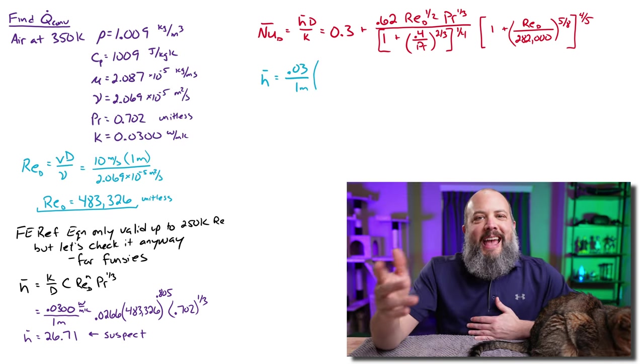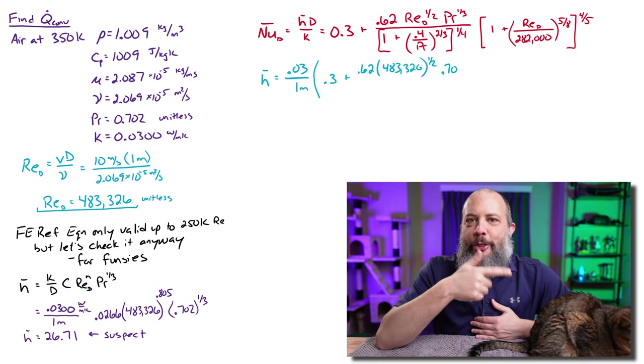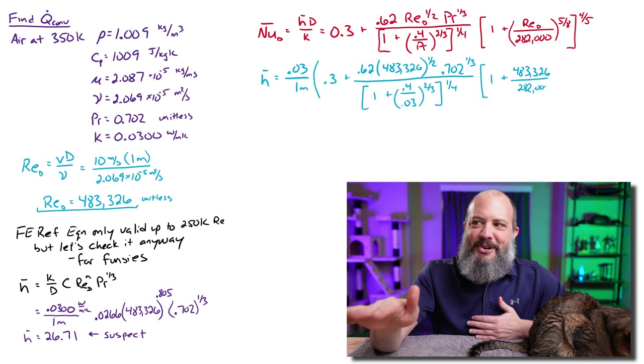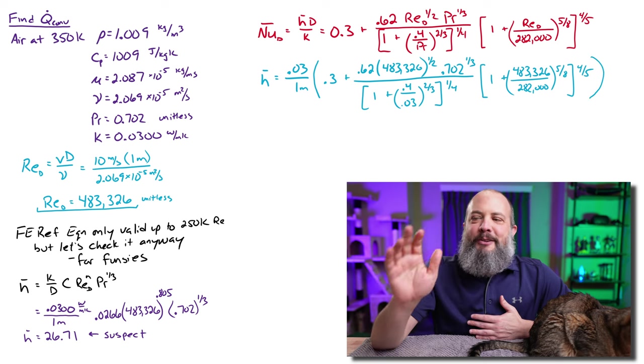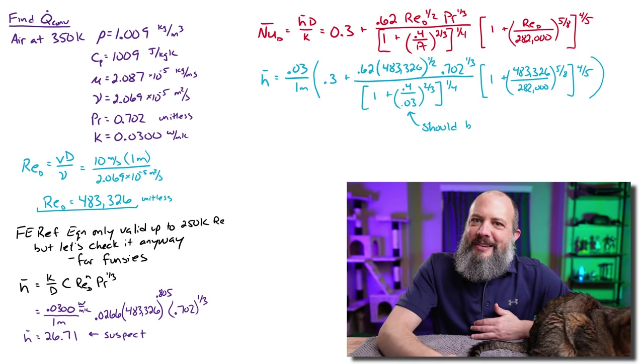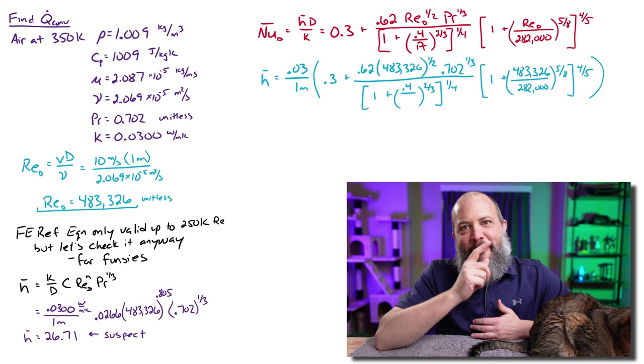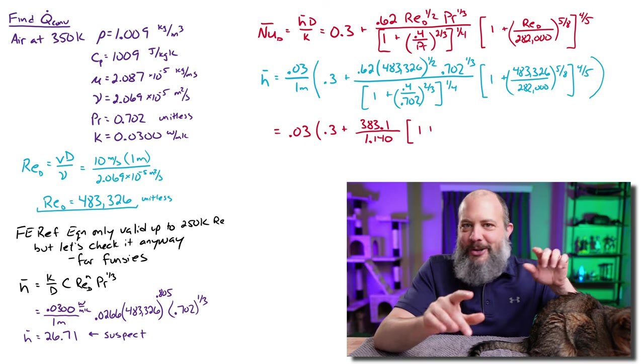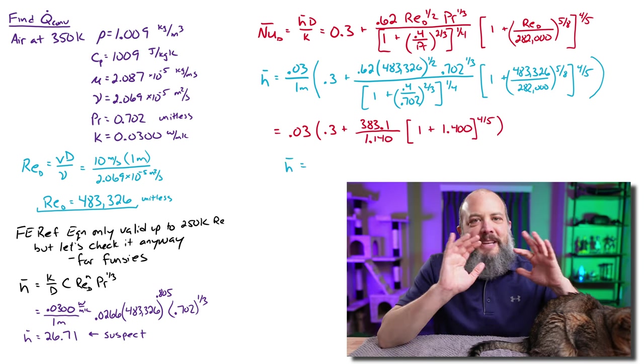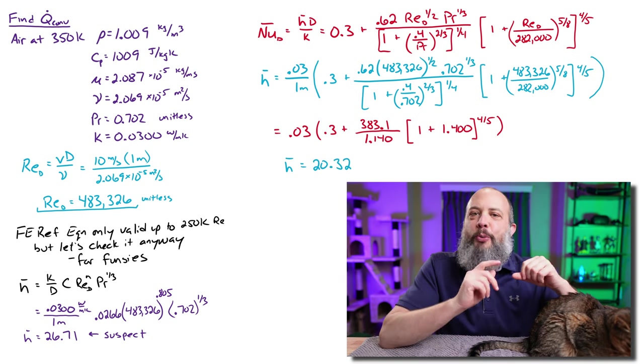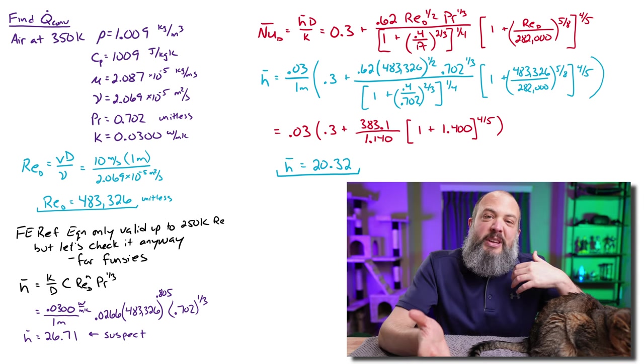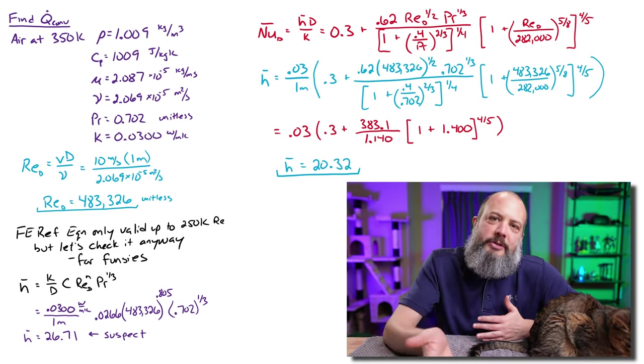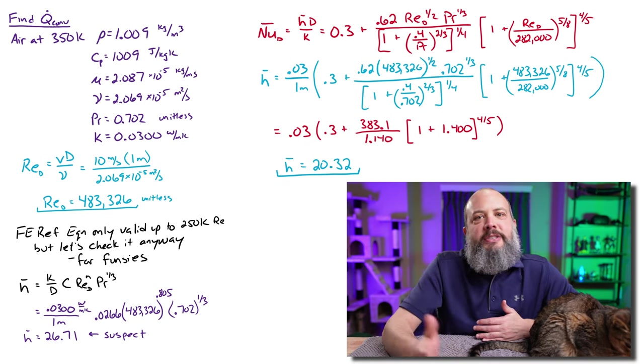So rearranging for h, I've got k over d. So Indy helped us find that 0.03 value before. We've got 0.3 plus 0.62 times the Reynolds number and the Prandtl number 0.702. We've got another 0.702 in the denominator. We've got the 483,000 again over there on the right. And there's no way I would ever risk typing this whole expression into my calculator all at once. So I'm going to break it up into some smaller pieces. But then eventually I get to an h value convection coefficient of 20.32. So this ended up being a little bit lower than the one we got using the FE reference manual equation, but is on the same order of magnitude. So that's kind of reassuring that I didn't make a completely egregious calculator mistake.